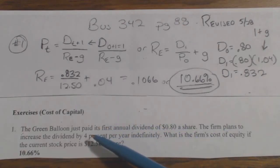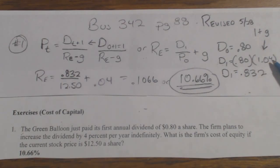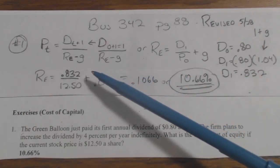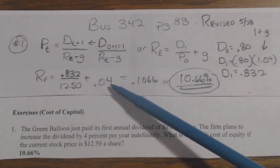Growth rate in this case is 4%, so it's D0, which is 80 cents, times 1.04, which is 1 plus the growth rate. That gives you D1, which is 0.832, so you put D1 over the current price plus the growth rate.